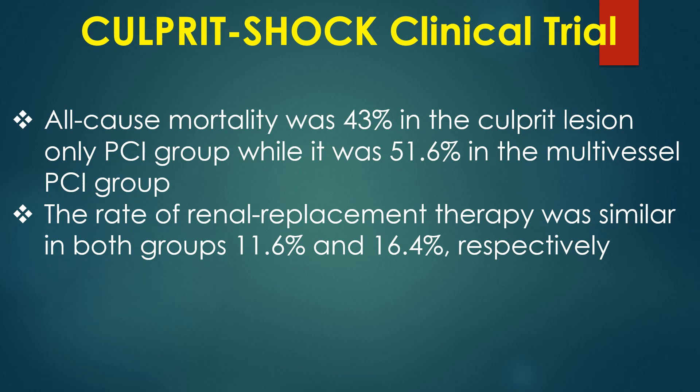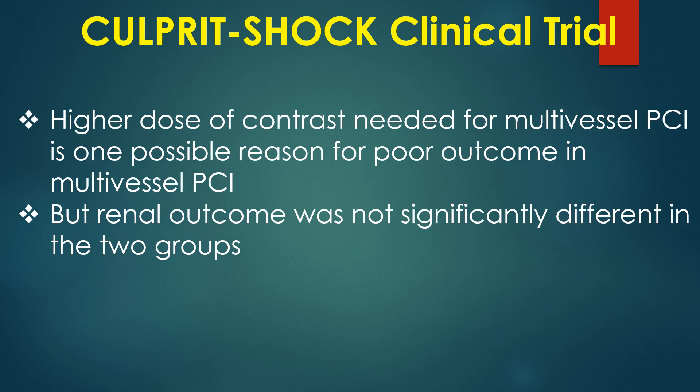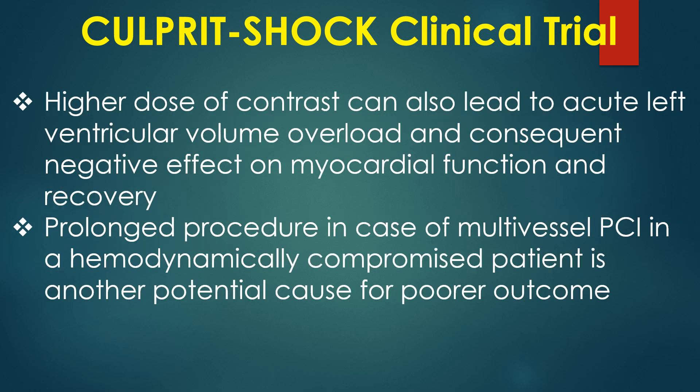All-cause mortality was 43% in the culprit lesion only PCI group while it was 51.6% in the multivessel PCI group. The rate of renal replacement therapy was similar in both groups — 11.6% and 16.4% respectively. Higher dose of contrast needed for multivessel PCI is one possible reason for the poor outcome, though renal outcomes were not significantly different. Higher contrast dose can also lead to acute left ventricular volume overload and consequent negative effects on myocardial function and recovery.